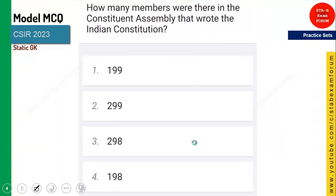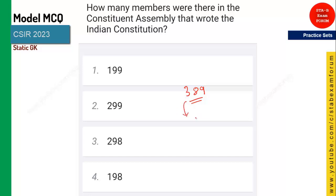How many members were there in the Constitutional Assembly that wrote the Indian constitution? Initially there were 389 members. But after partition, when Pakistan separated, some members left and the number became 299. So initially 389, and after division with Pakistan the number became 299.